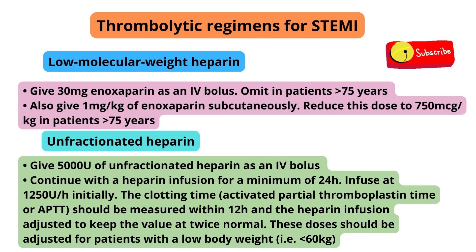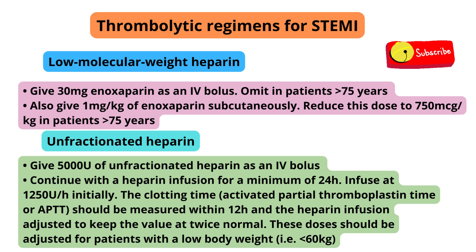Low molecular weight heparin: give 30 mg enoxaparin as an IV bolus — omit in patients over 75 years. Also give 1 mg/kg of enoxaparin subcutaneously; reduce this dose to 750 mcg/kg in patients more than 75 years.